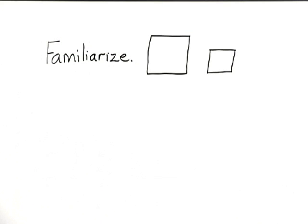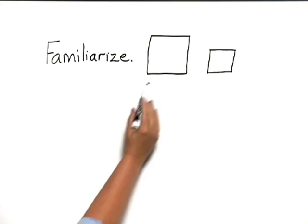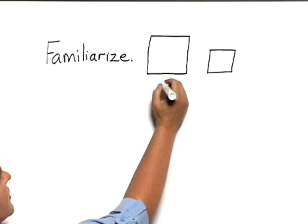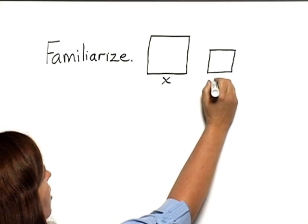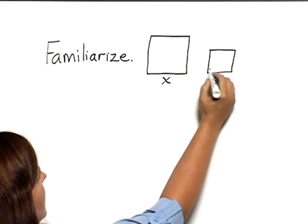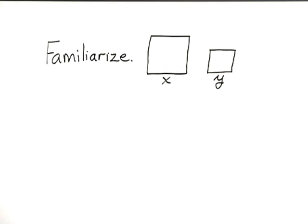When we familiarize ourselves with a problem that contains some geometry, the first thing we should do is make a sketch of the problem. We have two squares, and let's label the side of the larger square x, and the side of the smaller square y. All of these sides will be the same in each square because the sides of a square are the same.